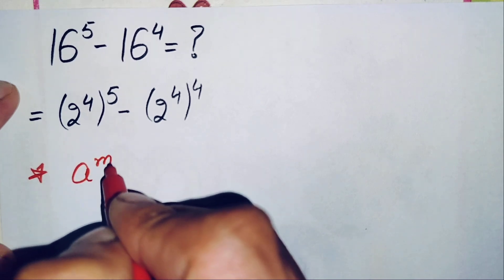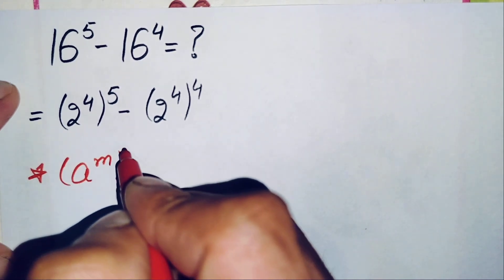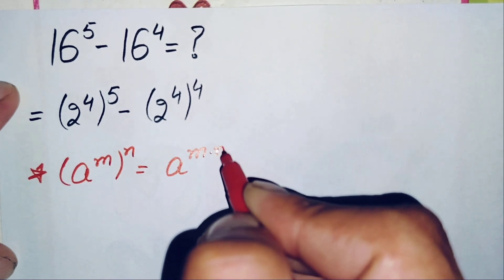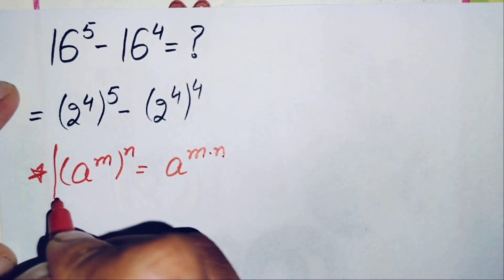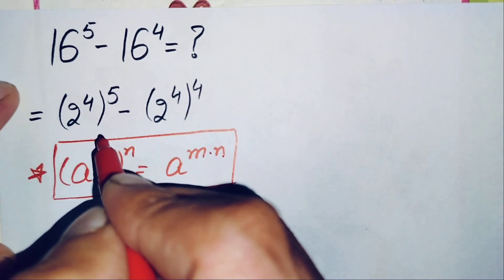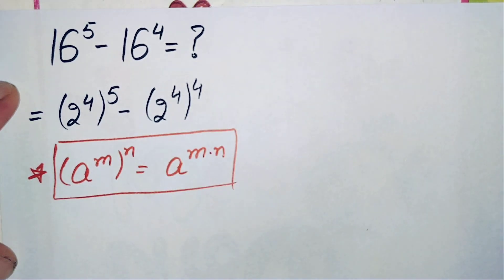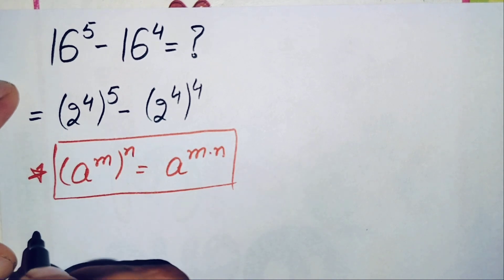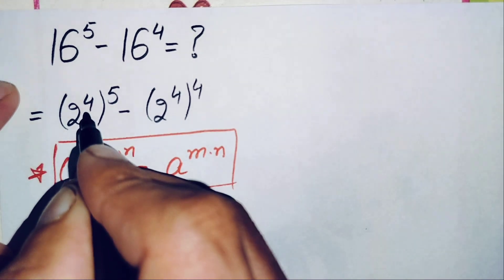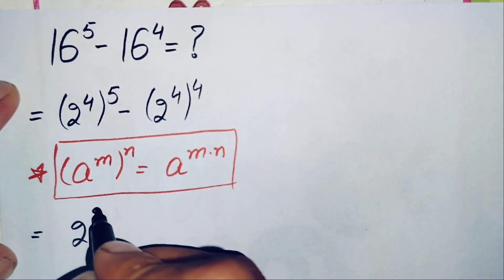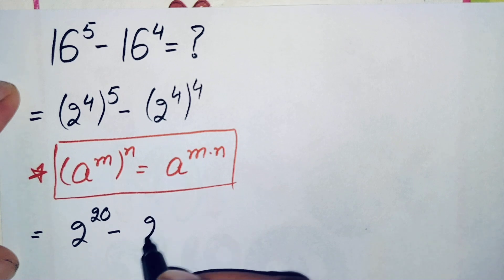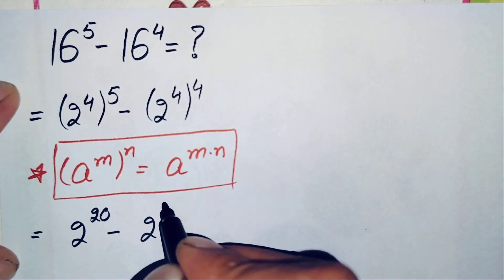The property is: r raised to power n, whole raised to power m, can also be written as r raised to power n times m. Using this exponential property, the first term becomes 2 raised to power 4 times 5, which is 20 — so 2 raised to power 20 — minus 2 raised to power 4 times 4, which is 16 — so 2 raised to power 16.